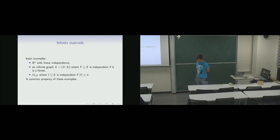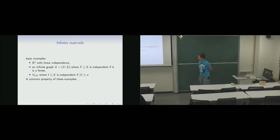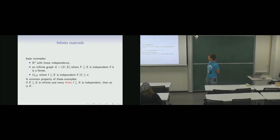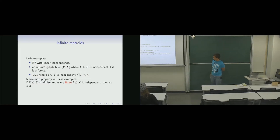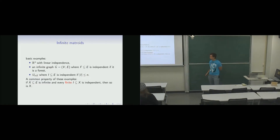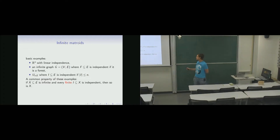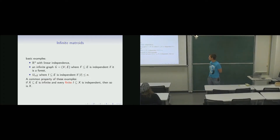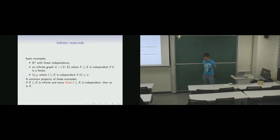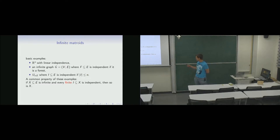These matroids have a common property: if there is an infinite set of edges and every finite subset of this infinite set is independent in the matroid, then the whole set is also independent. Matroids with this property are called finitary matroids, and in the early days only this kind of infinite matroids were known.